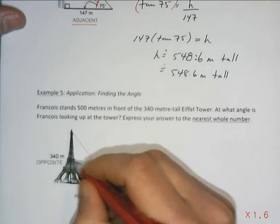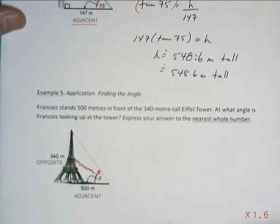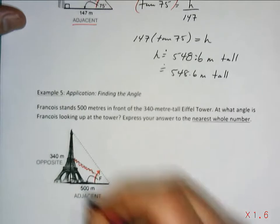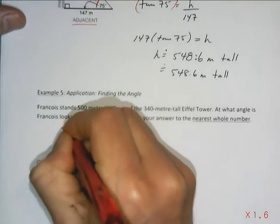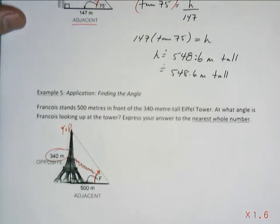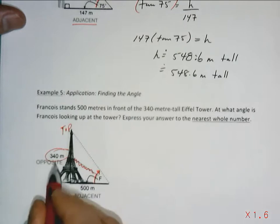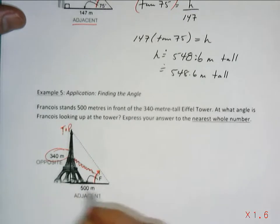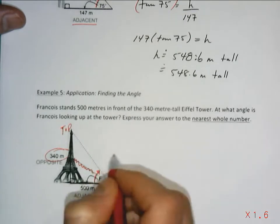So this, that's not a good idea to have that in the diagram. He's looking all the way to the top of the tower. We know that this side is going to be 340 and it's opposite. This side is 500 meters and it's adjacent. That's my hypotenuse.